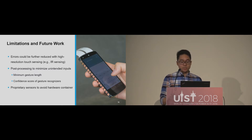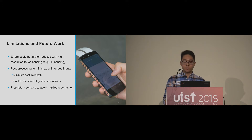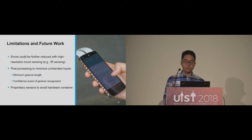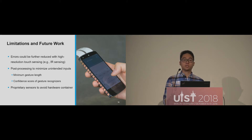We separated the touch sensing components from the processing units to keep the handheld device as small as possible. Smartphone manufacturers could, for example, use proprietary sensors such as a flexible PCB to integrate everything into a small device and therefore avoid the hardware container.